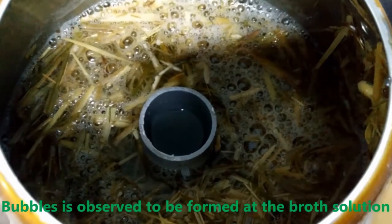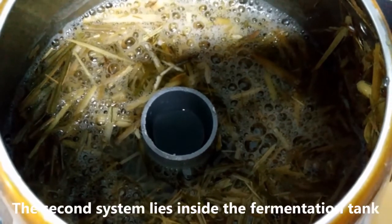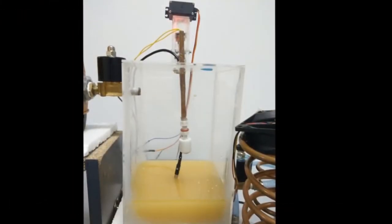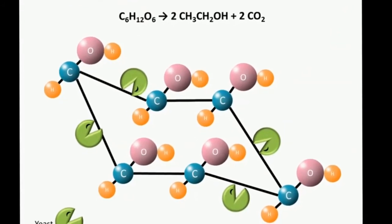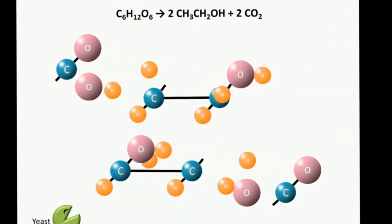Bubbles are observed to be formed in the broth solution. The second system lies inside the fermentation tank. By the addition of yeast, the glucose released in the first tank is consumed and then releases ethanol and carbon dioxide.